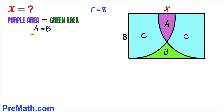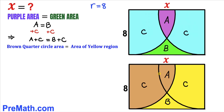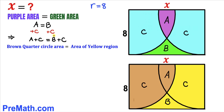Let's add C on both sides of this equation, so the left hand side becomes A plus C equal to B plus C. As you can see in the next diagram, A plus C is the brown shaded quarter circle area, and B plus C is the area of the yellow region on the other side.